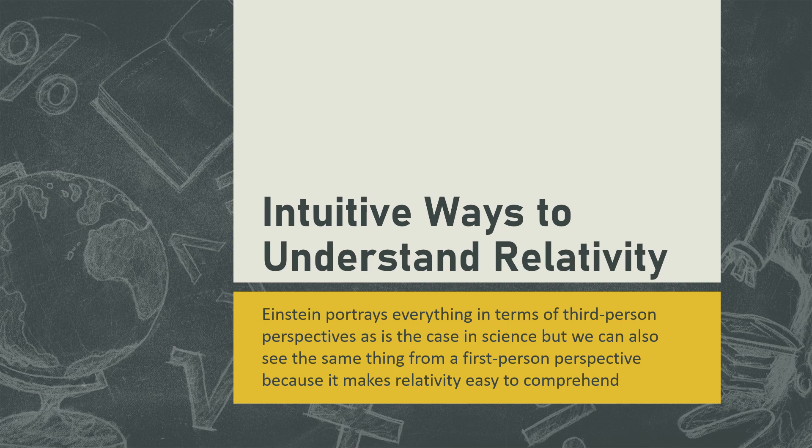Length contraction and time dilation are some of the hardest things to understand for newcomers, because we look at instruments from a third-person perspective. In the following intuitive examples, I will illustrate the problem using human observers, and then we can drop the third-person perspective and see the same situation from a first-person perspective. Einstein was very good at thought experiments — he could put himself into the shoes of others — but it is not always easy for everyone, hence the ordinary human examples are very helpful.